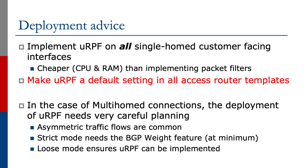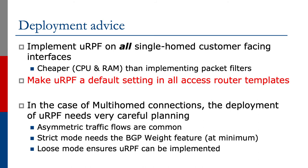Our deployment advice would be to implement URPF on all single-homed customer-facing interfaces. This is much cheaper in terms of CPU and RAM than implementing packet filters on the router. Just make URPF a default setting in all access router templates, as many network operators have been doing for most of this century. In the case of multi-homed connections, the deployment of URPF needs very careful planning, if it is implemented at all.